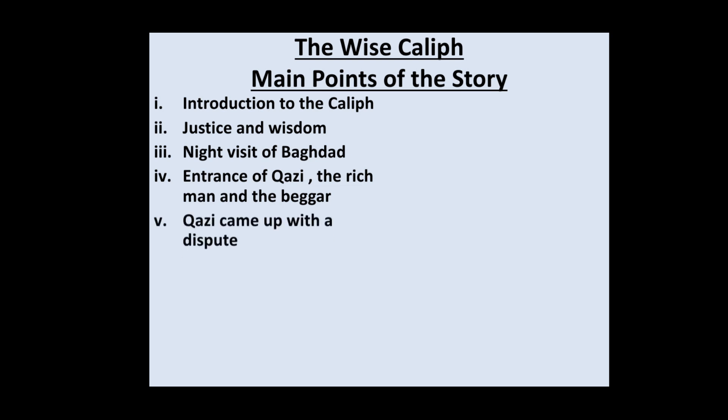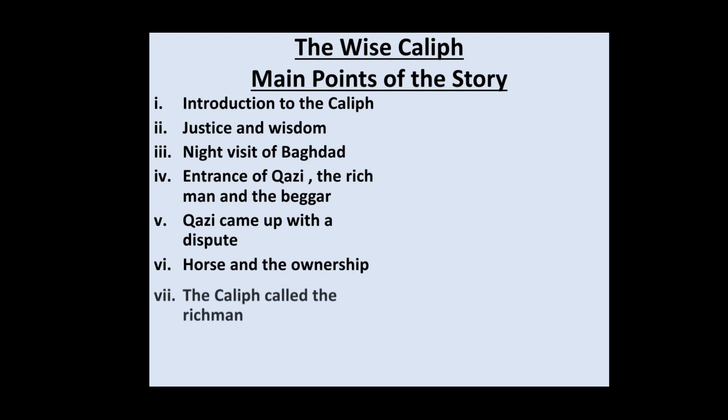The Kazi told the Caliph that two people — a rich man and a beggar — were fighting over a white horse, and everyone was claiming ownership of the horse. Both were claiming that the horse belonged to them. Since it was impossible for both to own it, this was the dispute the Kazi was unable to solve, which is why he came to the wise Caliph.